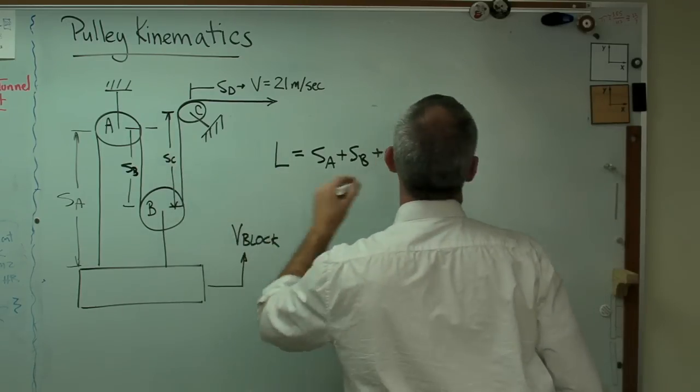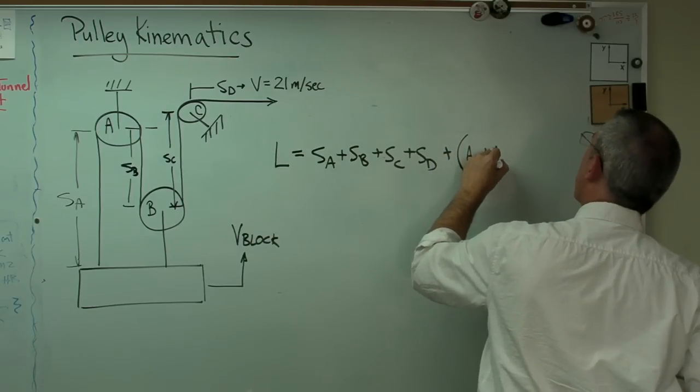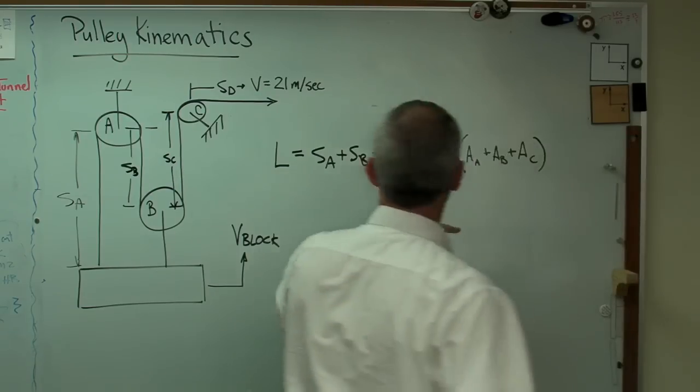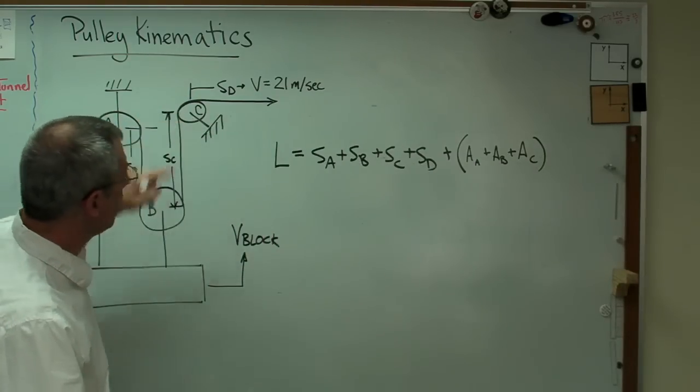Plus, there's some other stuff that isn't going to change. There's some different arc length A plus arc length B plus arc length C. That's the distance around this pulley, around the bottom of that one, and around that one there.